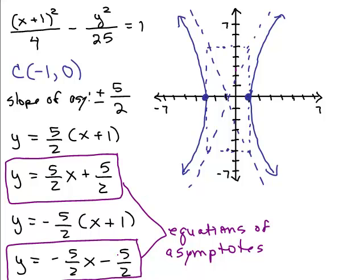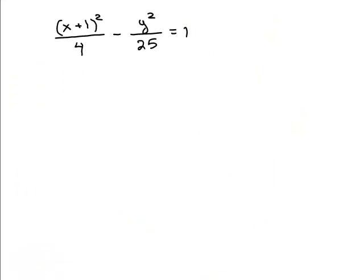All right, the last thing we're asked to do is to write the equation in general form. So we need to take this original equation and to put it in general form, we're just going to multiply everything out so we don't have any fractions and get everything on one side of the equation. So here's the equation. To get rid of the fraction, you multiply by the least common denominator, which is 100 or 25 times 4. So I'm going to multiply both sides by 25 times 4.